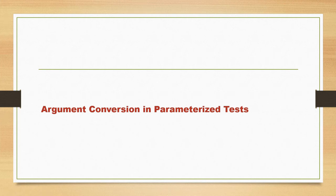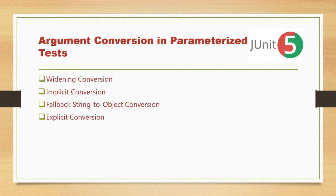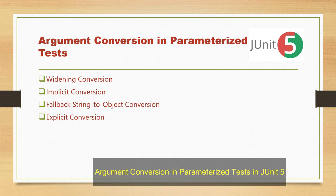Welcome to KKJavaTutorials. In this video tutorial we will talk about argument conversion in parameterized tests in JUnit 5. We are going to learn four things: widening conversion, implicit conversion, fallback string-to-object conversion, and explicit conversion in JUnit 5 parameterized test cases.